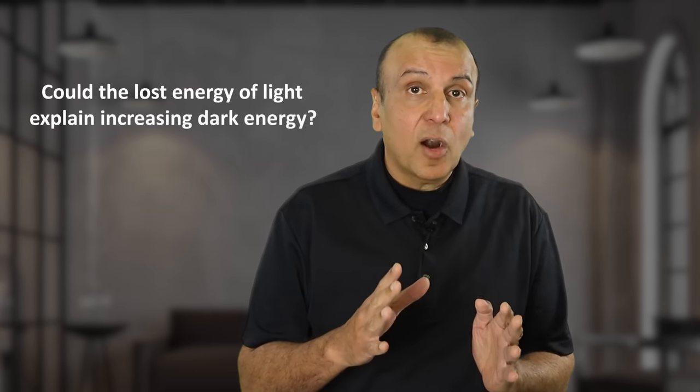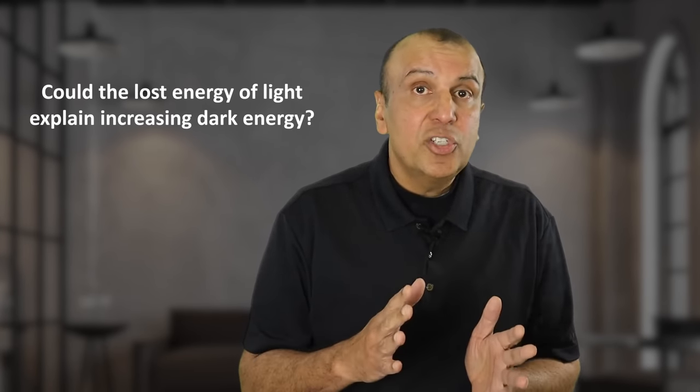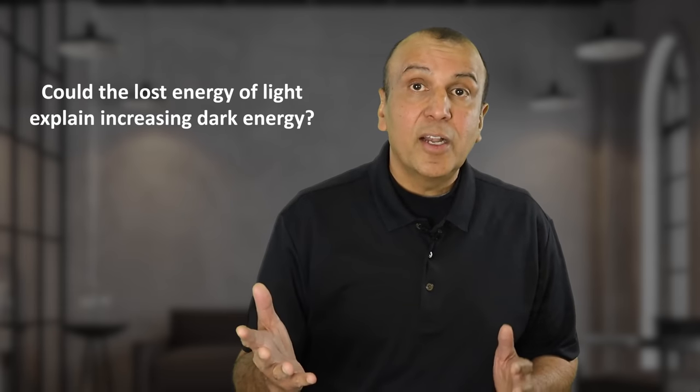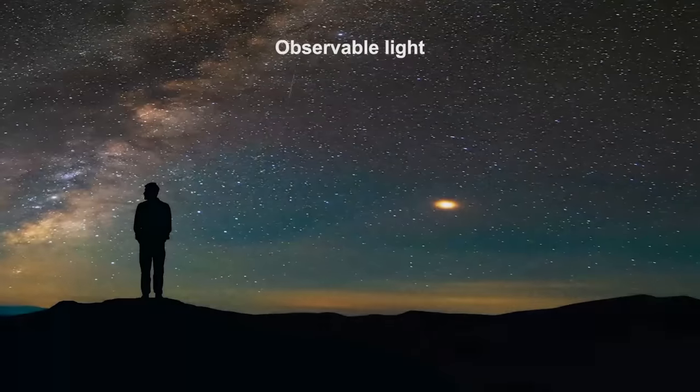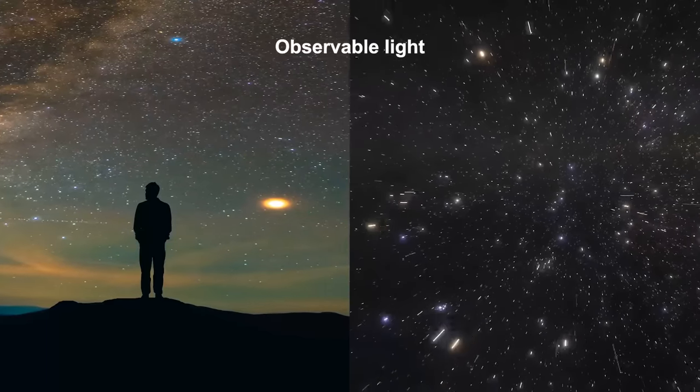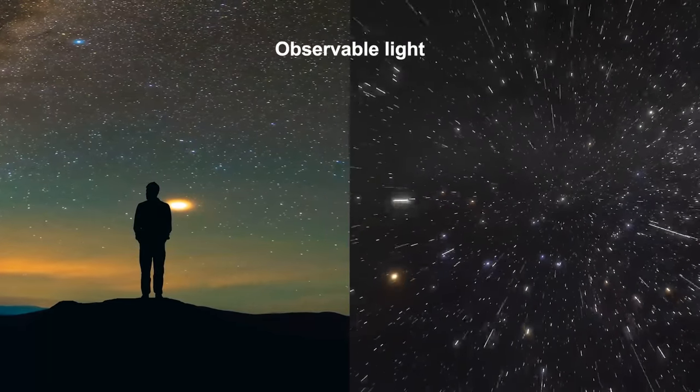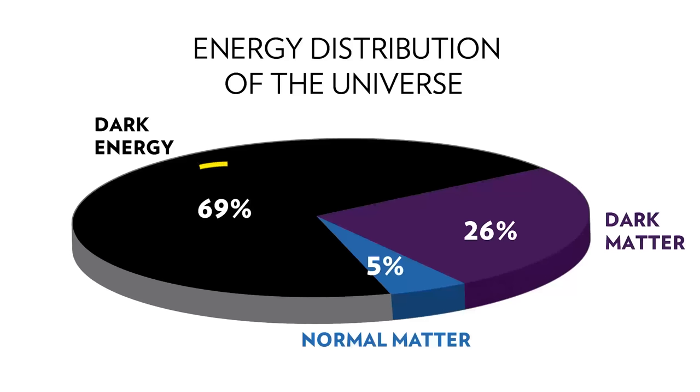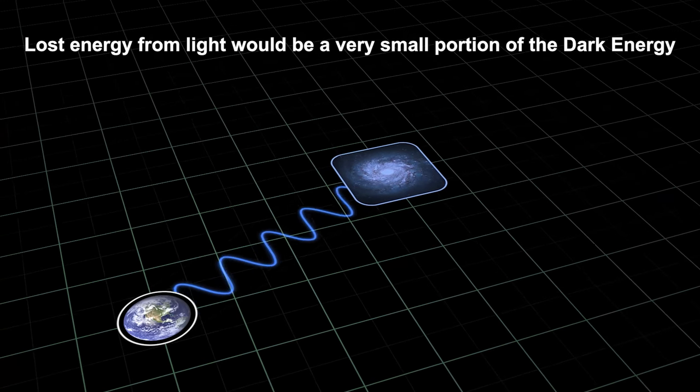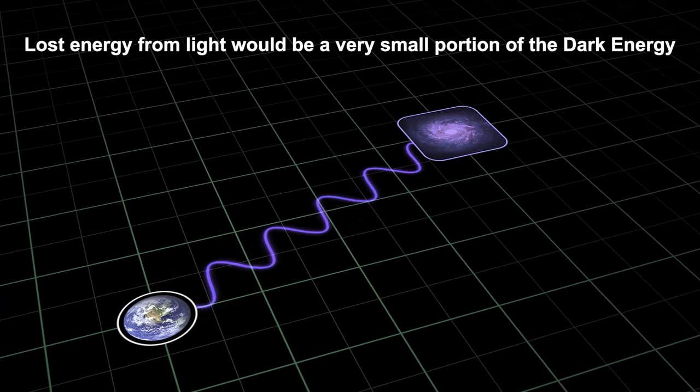Now I know some of you are going to ask, since we know that dark energy is increasing, could it be that the energy that light waves lose turns into dark energy, thus conserving energy overall? Well, the problem with that idea is that even if you take all the observed light of the universe into account, it would not account for the amount of dark energy in the universe. Dark energy is almost 70% of the energy of the universe, whereas all the matter and light that we can observe is only about 5%. The lost energy of light would be a minuscule portion of all the energy needed to counterbalance increasing dark energy.